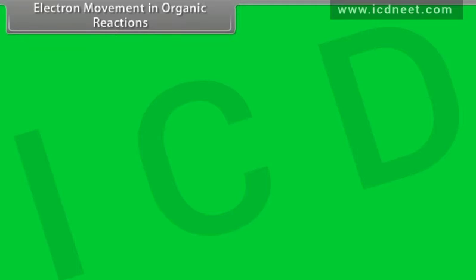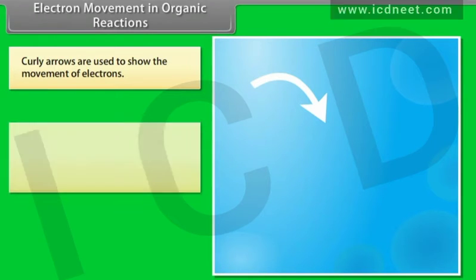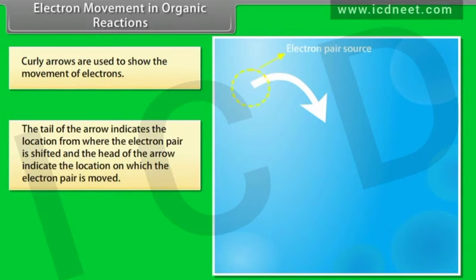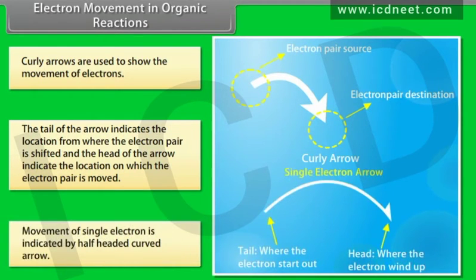Electron movement in organic reactions: curly arrows are used to show the movement of electrons. The tail of the arrow indicates the location from where the electron pair is shifted, and the head of the arrow indicates the location to which the electron pair is moved. Movement of a single electron is indicated by a half-headed curved arrow.